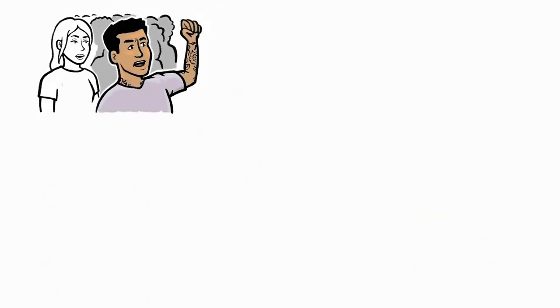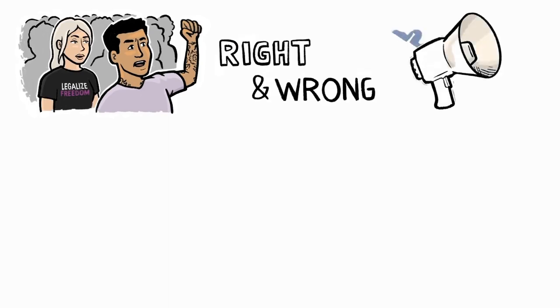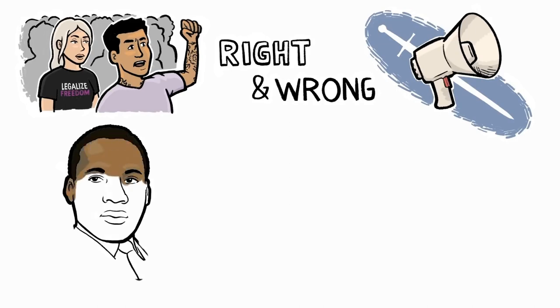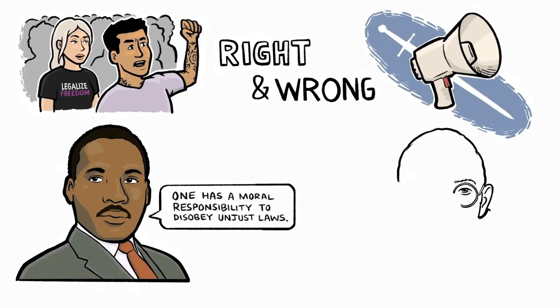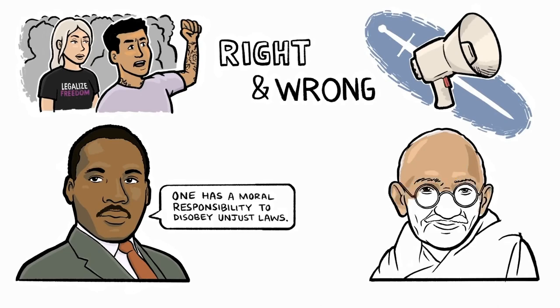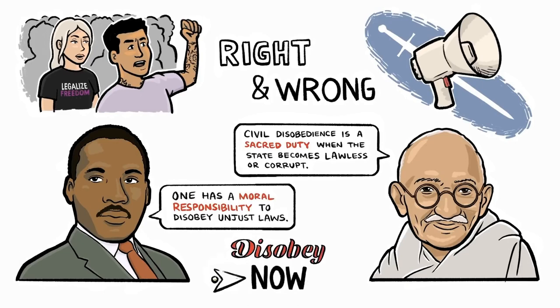Our willingness to disobey authorities when it makes moral sense to do so, to stay true to our sense of right and wrong, is the most powerful weapon we have. Martin Luther King Jr. said, One has a moral responsibility to disobey unjust laws. Gandhi tells us, Civil disobedience is a sacred duty when the state becomes lawless or corrupt. It's our moral responsibility and sacred duty to disobey and to do so now.